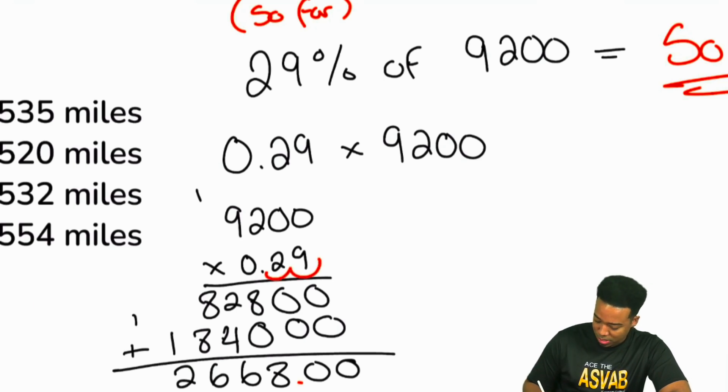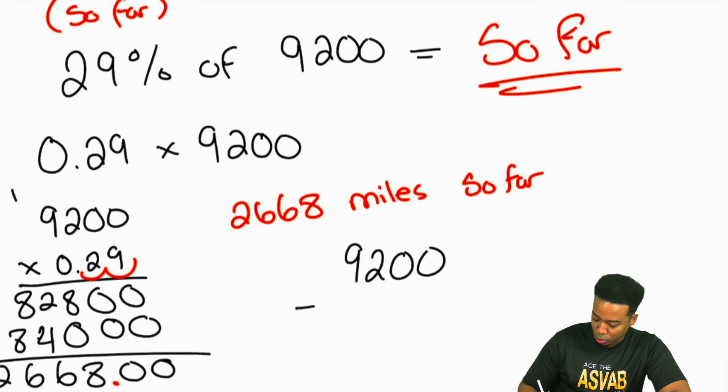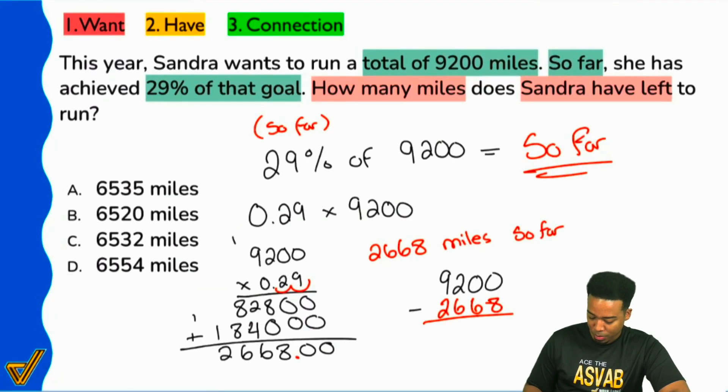And from here, we see that we had two decimal places right there. So we have 2,668 miles so far. So to get the final answer, we'll take the 9,200. We'll subtract the 2,668. And what will that give us? Well,